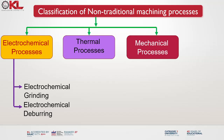Electrochemical grinding is a hybrid machining process that combines the principles of electrochemical machining and conventional grinding. It is primarily used for precision machining of hard and brittle materials where traditional grinding methods may be challenging or ineffective. Applications include the manufacture of cutting tools, aerospace components, medical devices and precision molds, often used for producing complex geometries, sharp edges and fine surface finishes.